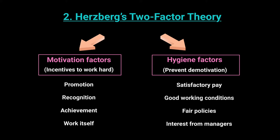The second content theory is by Herzberg — his theory is called the two-factor theory. Don't confuse Herzberg with Mintzberg, who was the management theorist. Herzberg says that what drives people is a combination of two things, and a business needs to be aware of both sides and provide them so that workers feel compelled — willingly wanting — to do well for the business. He divided those factors into motivation factors and hygiene factors.